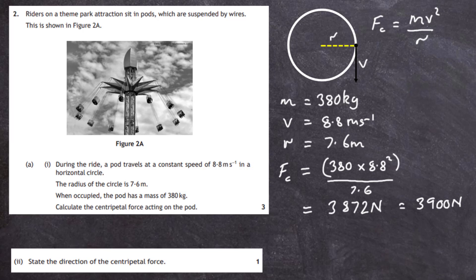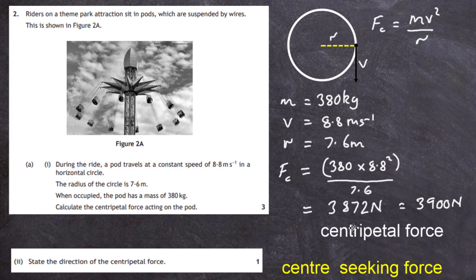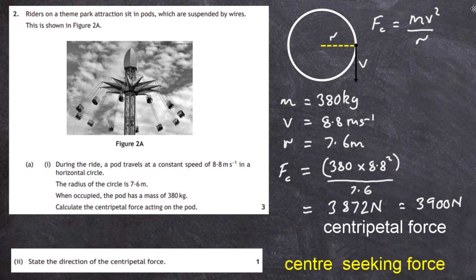Part two asks us simply to state the direction of the centripetal force. A centripetal force is a center-seeking force — 'centri' means center and 'petal' means seeking. So the force is acting towards the center. We can show that on our diagram by drawing the centripetal force Fc pointing towards the center, and that gives you one mark.